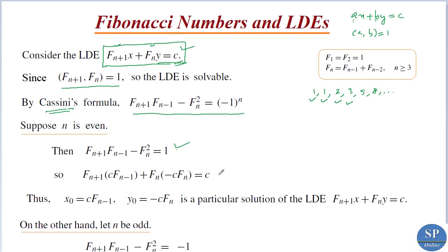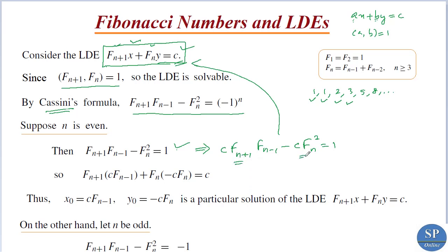That is c times fn squared equals c. When we multiply throughout by c, we get fn+1 times (c times fn-1) minus fn times (c times fn) equal to c. Taking fn+1 and fn outside: fn+1 times (c·fn-1) plus fn times (-c·fn) equals c. From this we get x₀ equal to c times fn-1 and y₀ equal to minus c times fn as a particular solution of the LDE when n is even.